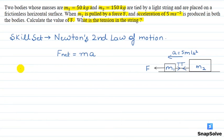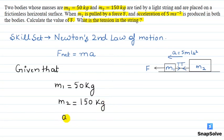We have given that M1 is equal to 50 kg and M2 is equal to 150 kg. Also, acceleration a is equal to 5 meter per second square.